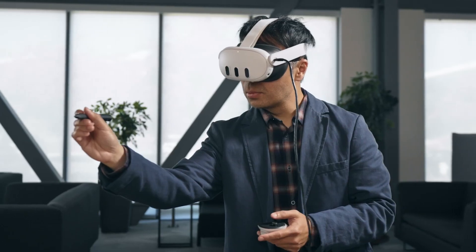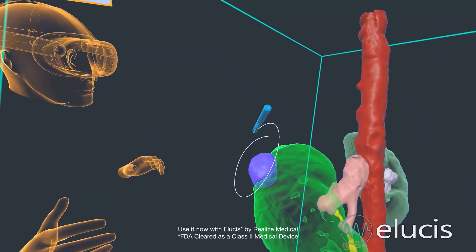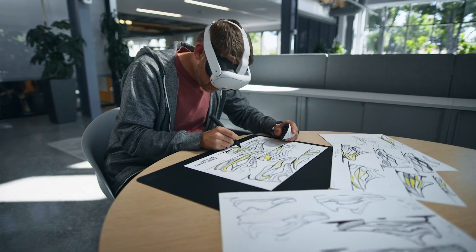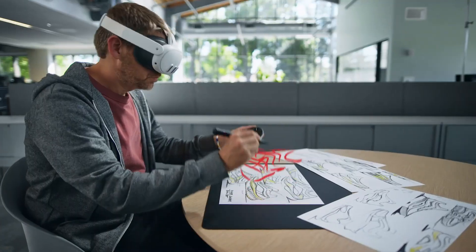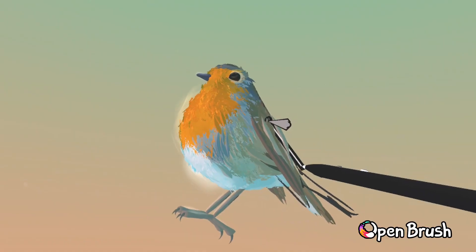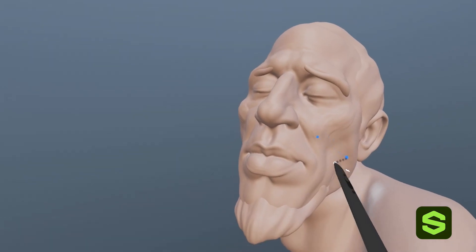Imagine starting a project on your tablet and seamlessly continuing it on your desktop or VR headset. With the MX-Ink Stylus, cross-device synchronization makes this a reality. Your work is consistently updated across all your devices, ensuring a smooth workflow and uninterrupted creativity.